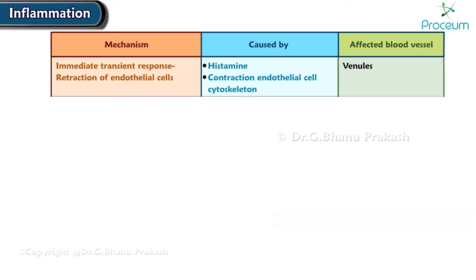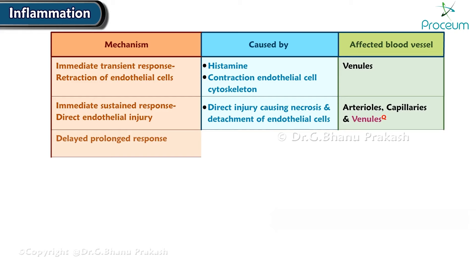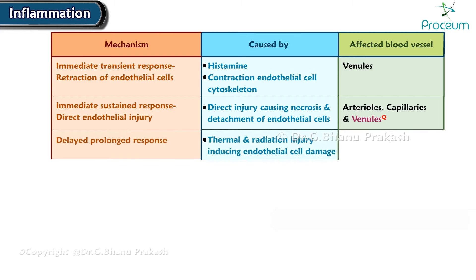The immediate sustained response, due to direct endothelial injury, is caused by direct injury causing necrosis and detachment of endothelial cells, causing a change in the arterioles, capillaries, and venules. A delayed prolonged response occurs due to thermal and radiation injury, inducing endothelial cell damage and affecting the capillaries and venules.